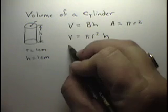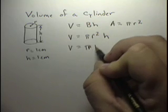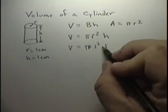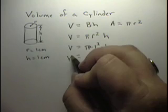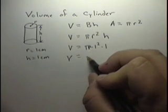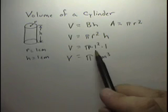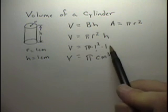So volume is going to equal pi times one squared times one, which would give us a value of volume equals pi centimeters cubed. Because one centimeter times one centimeter is squared times one more centimeter is cubed.